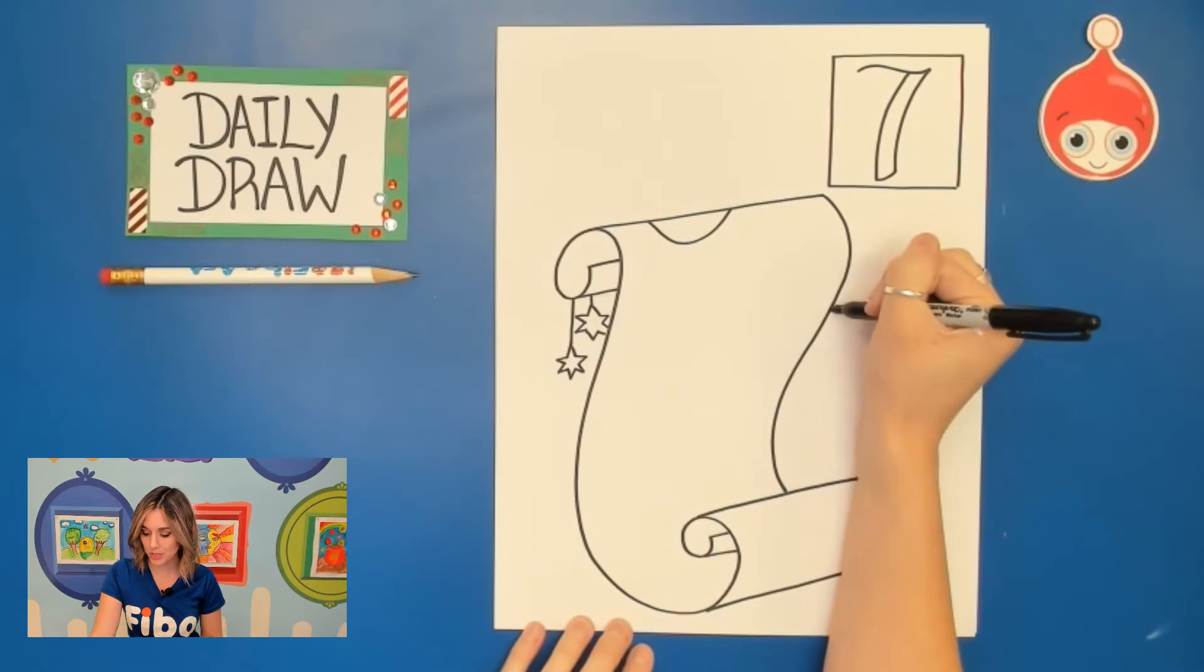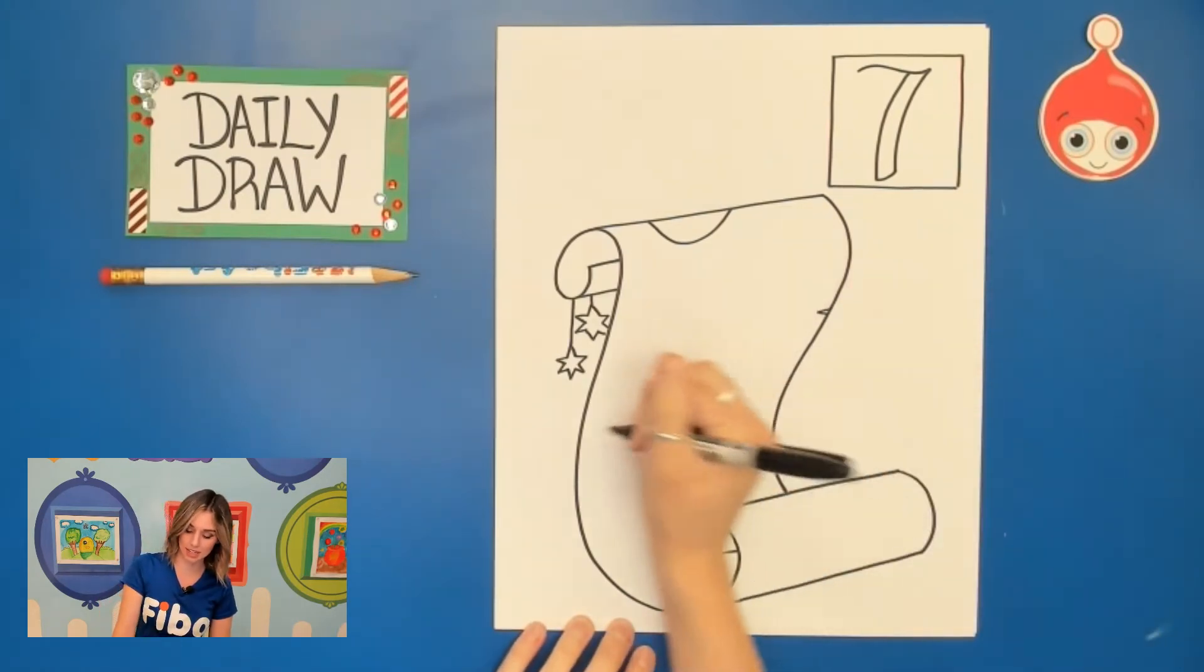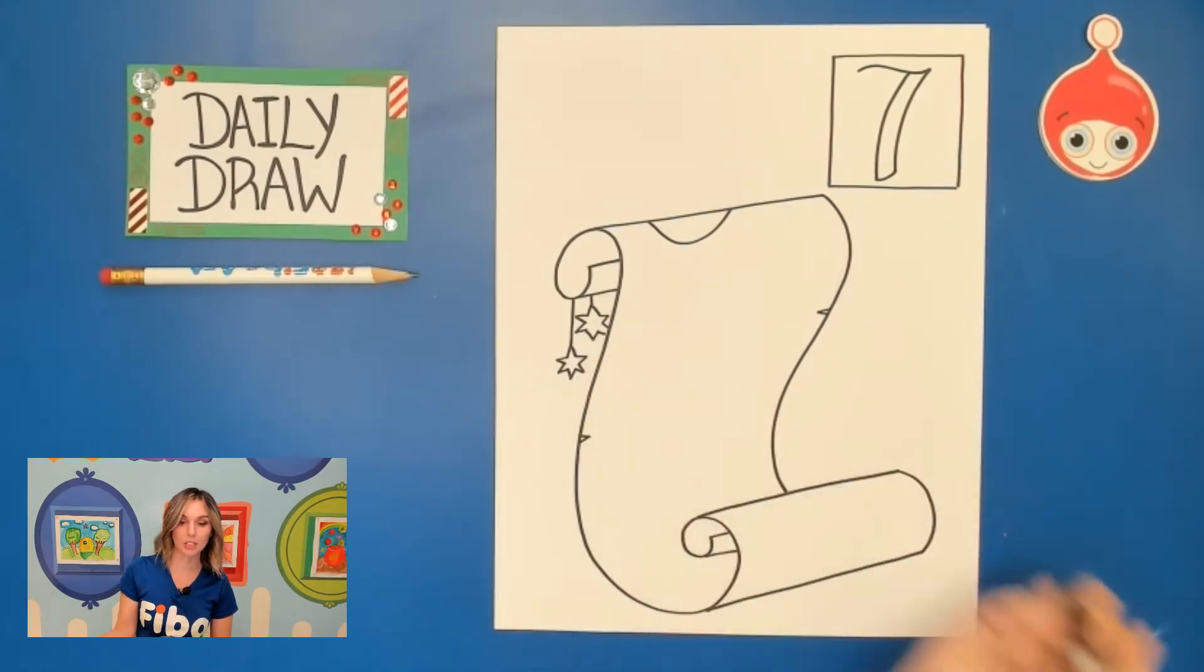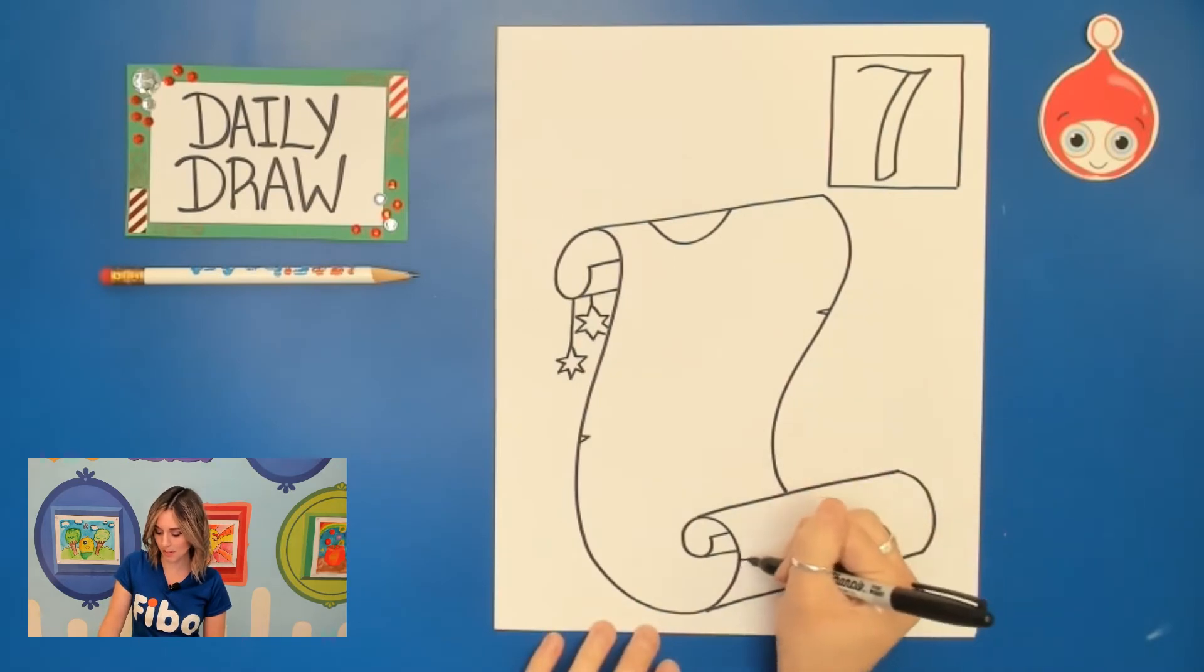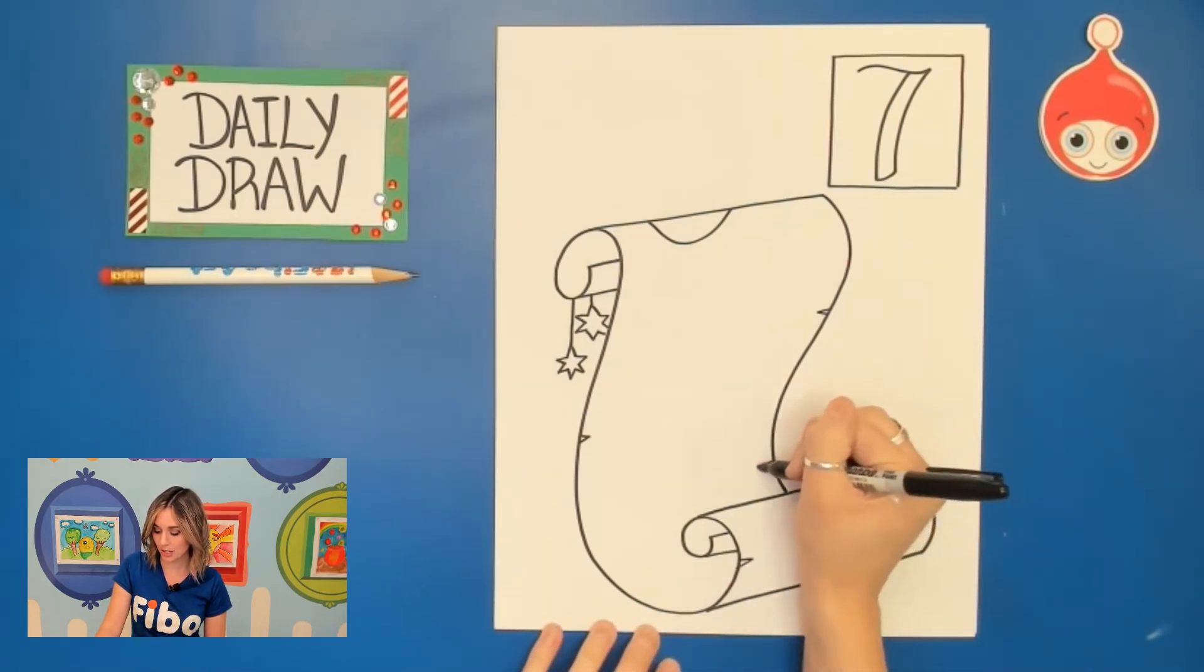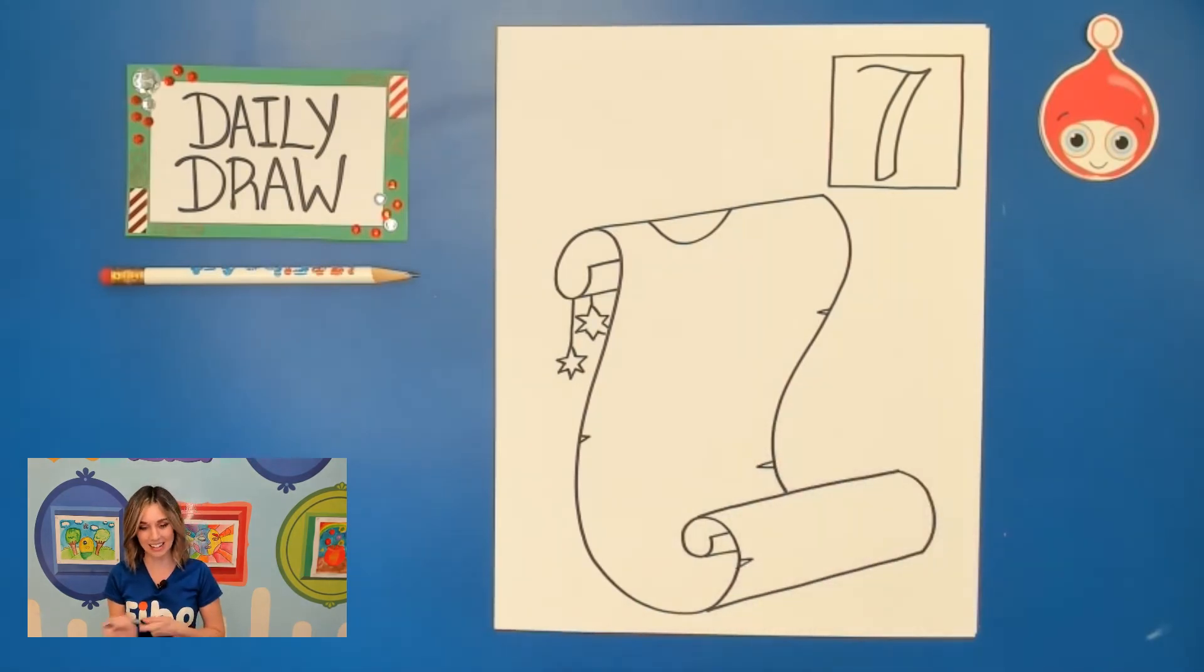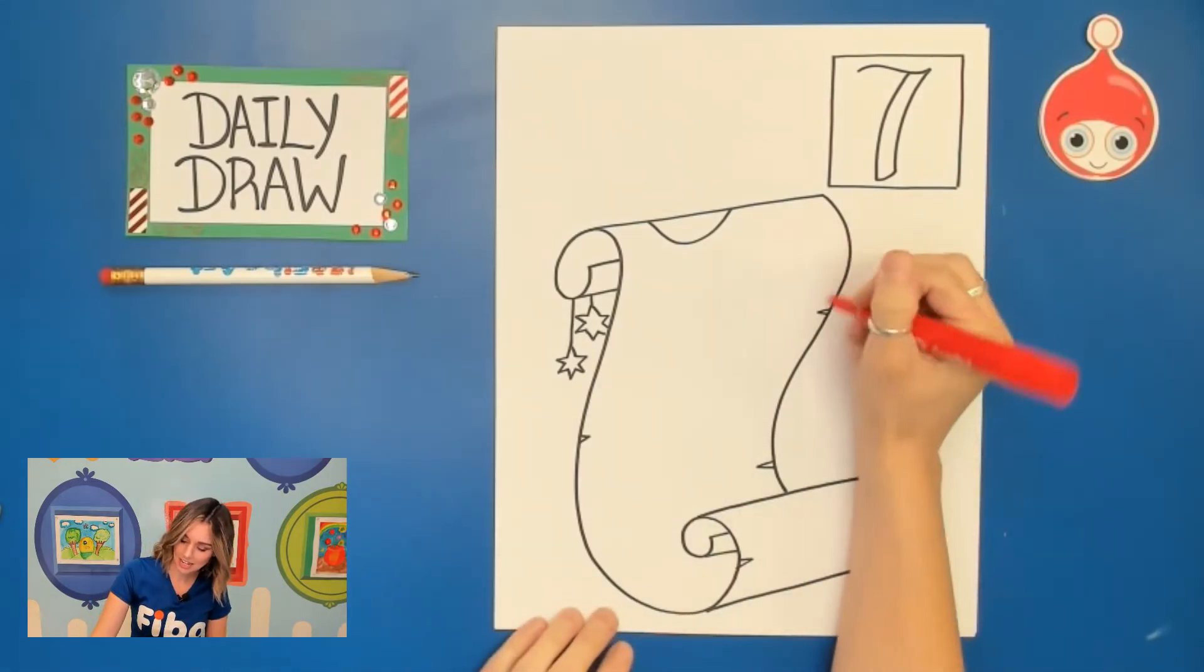You can also if you want to just add some of these rip marks to make it look more like parchment paper. Just make sure that if you do add any of those details that you take your eraser and erase the edges here.